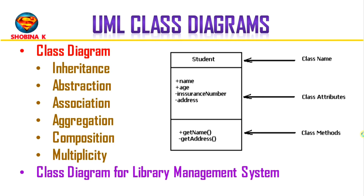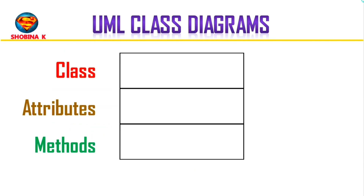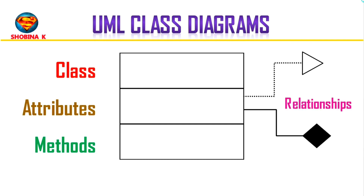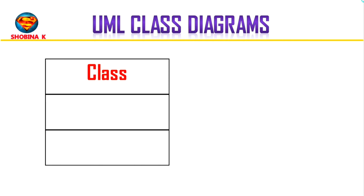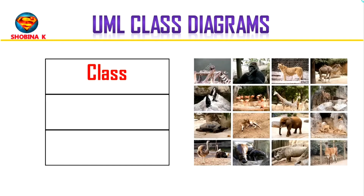Hello everyone, today I'll be teaching you about UML class diagrams. We will start with some basic characteristics, then we will talk about the relationships, and we will finish up by going through an example. Let's talk about some of the basic characteristics of class diagrams. I'm going to make an example using a class diagram for a zoo system, which will make all these concepts easier to understand.